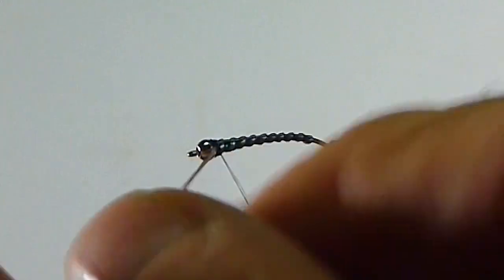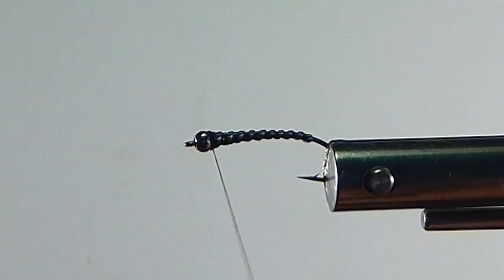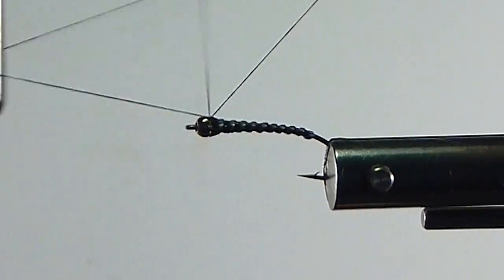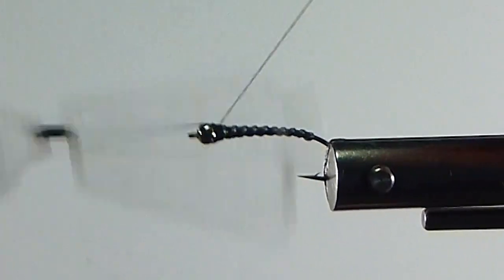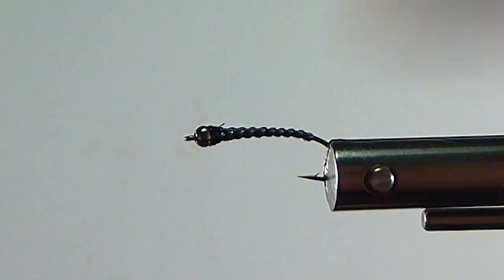But the gray is a prominent color. And it looks good. It looks great in the water. Fish like to eat it. Simple. Then I'll just put a nice thread head in behind there.